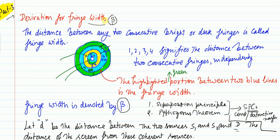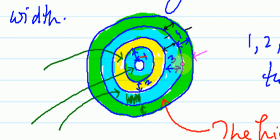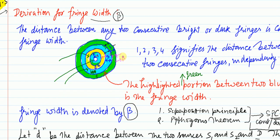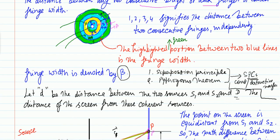In this section I will discuss fringe width, denoted by beta. The distance between any two consecutive bright or dark fringes is called the fringe width. The red color denotes the bright fringe and the blue color also denotes the bright fringe; the distance between these two is beta. This is true for consecutive fringes whether you consider constructive bright or dark fringes — the distance is the fringe width.